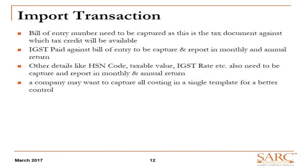Similarly, in case of imports, going forward CVD and SAD will be substituted by IGST. Looking at the return formats in GSTR 2 and the annual return, the bill of entry is the tax document and return formats require the bill of entry number to be stated for taking input credit. In annual returns we also need to state the custom duty amount. Most companies currently capture import costs via journal entries, but now we must capture bill of entry number and HSN code-wise detailing of each line item of assessable value, custom duty and IGST amount — this can be a significant ERP change requirement.